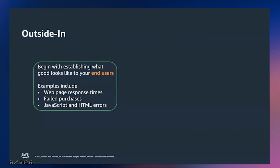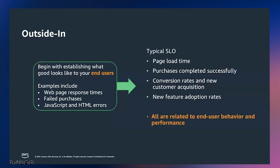Looking at the outside-in approach, this begins with establishing what good looks like to your customer. Some examples include: what is the webpage response time? Are customers' shopping carts completing purchases? Are they getting any errors? SLOs you can monitor include page load time, whether purchases are completed successfully and in what time, what is your conversion rate for new customer acquisitions, and how fast are new features you're rolling out being adopted. These are all related to end-user behavior and performance, and you should use these signals to build your SLOs.